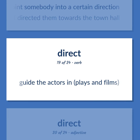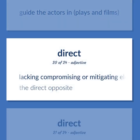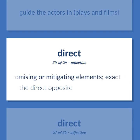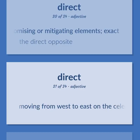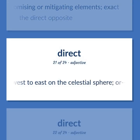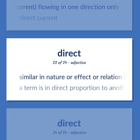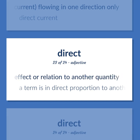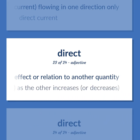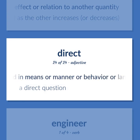Guide the actors in plays and films. Lacking compromising or mitigating elements. Exact. The direct opposite. Moving from west to east on the celestial sphere, or, for planets, around the sun in the same direction as the earth. Of a current, flowing in one direction only. Direct current. Similar in nature or effect or relation to another quantity. A term is in direct proportion to another term if it increases or decreases as the other increases or decreases. Straightforward in means or manner or behavior or language or action. A direct question.